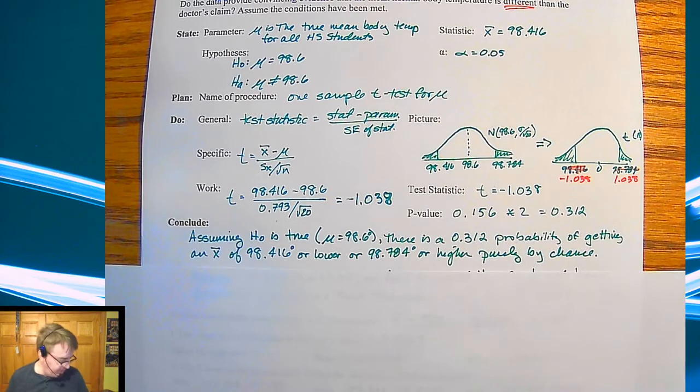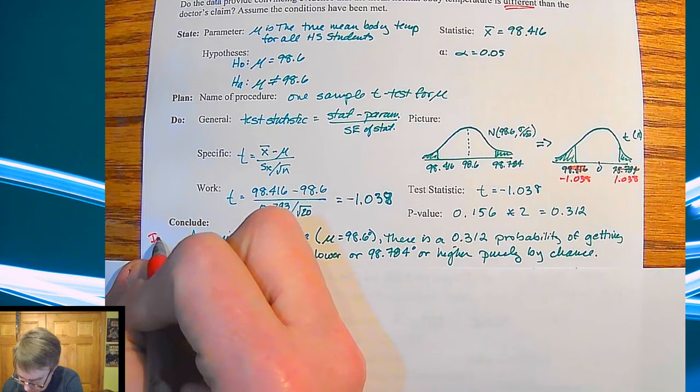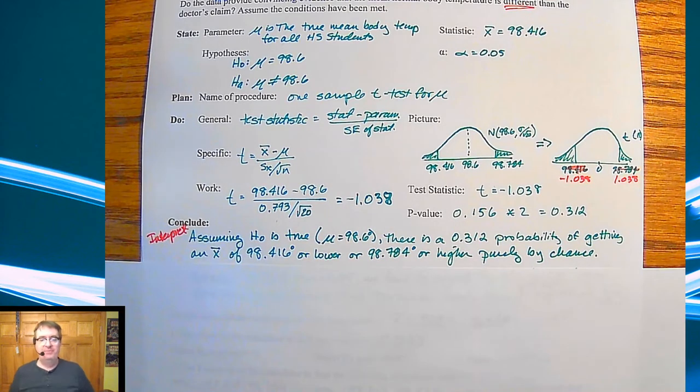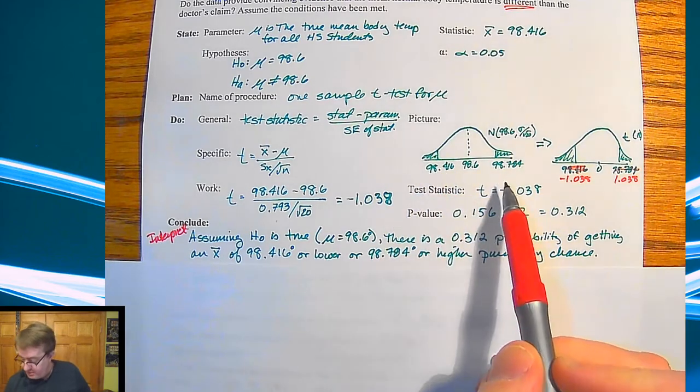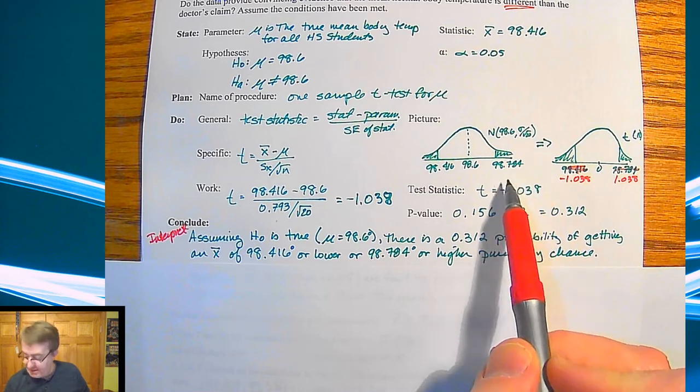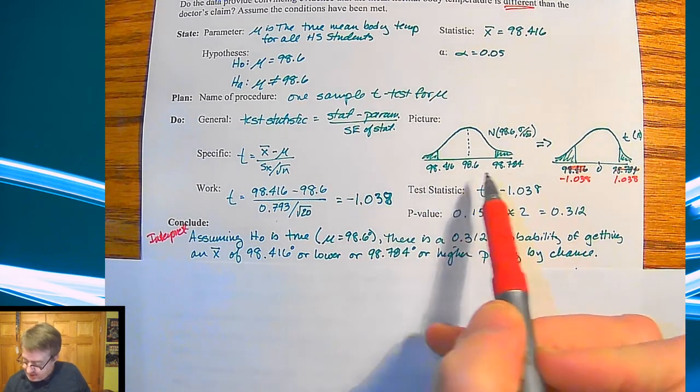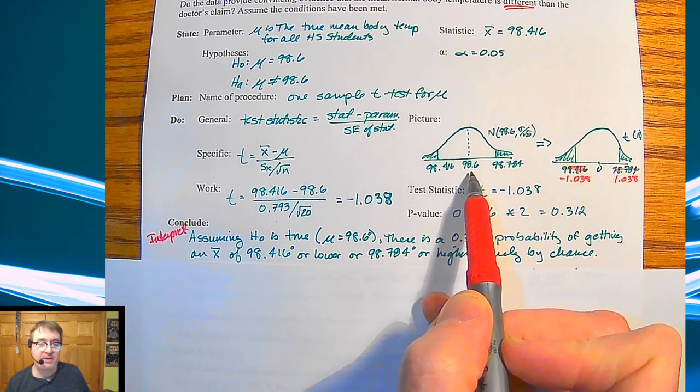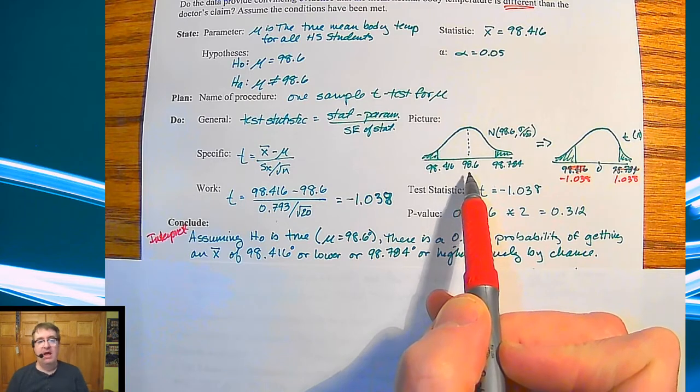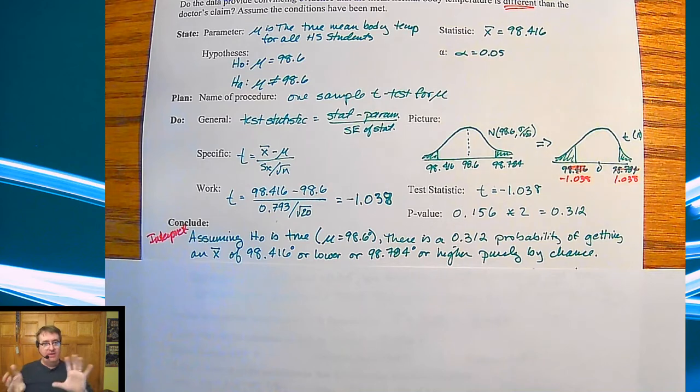So the first part here, we're going to interpret it because you need to tell people this is what we got. This is the explanation of the math. So assuming that the null hypothesis is true, that the true mean of all high school students' body temperature is 98.6, there is a 0.312 probability of getting a sample mean of 98.416 or lower, or 98.784 or higher, purely by chance. How did I get this into value? Just like here, how I had a negative value and a positive one, I took the difference between 98.416, which was our sample mean and the null hypothesis value. And then we added it to move it to the other side. So again, it's kind of like that margin of error that we were using for confidence interval.